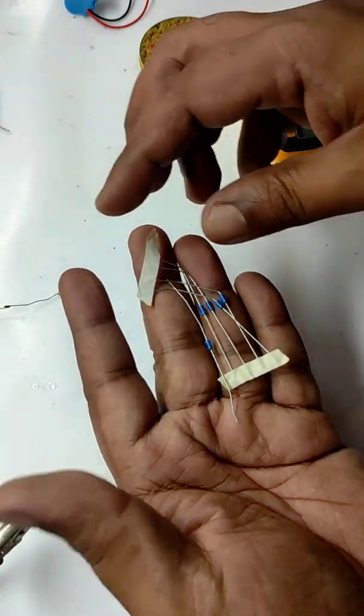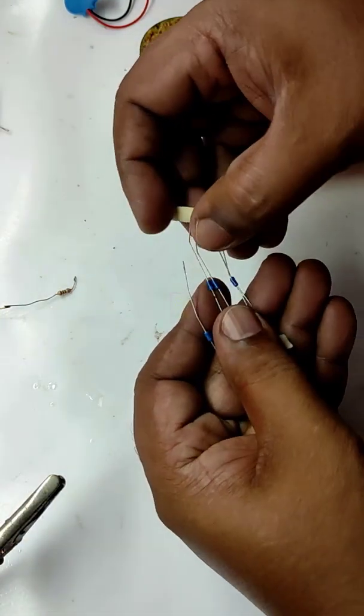This is DB3 diac and you can see this inside electronic ballast, CFL drivers, etc.